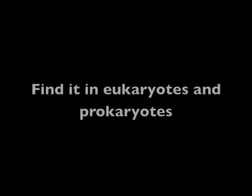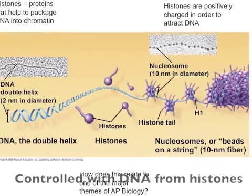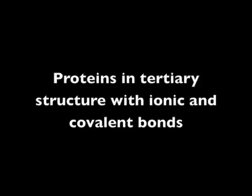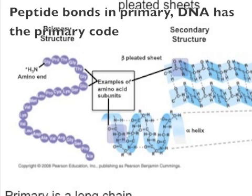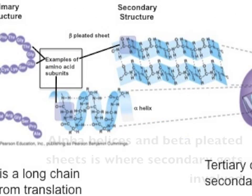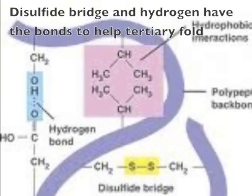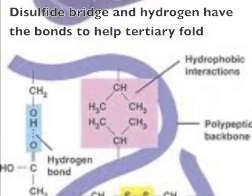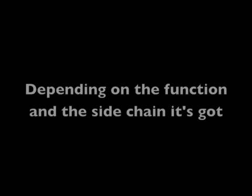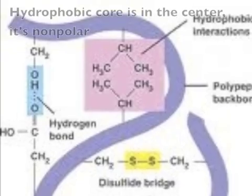Protein structure is found in eukaryotes and prokaryotes, controlled by DNA from histones. Proteins in tertiary structure with ionic and covalent bonds, peptide bonds in primary — DNA has a primary code. Alpha helices and beta-pleated sheets for secondary, disulfide bridges and hydrogen bonds help tertiary fold, with van der Waals forces. Hydrophobic cores in the center, non-polar.